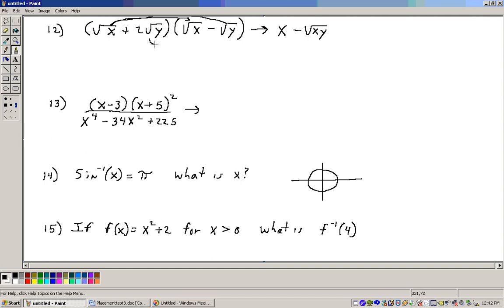Now let's go to the inner. We have two square roots of y times the square root of x, which would be two square roots of xy plus two square roots of xy.